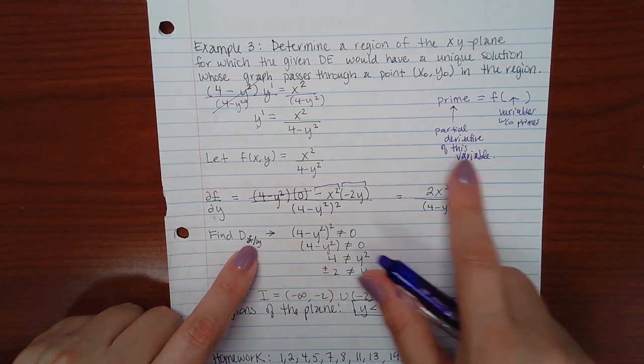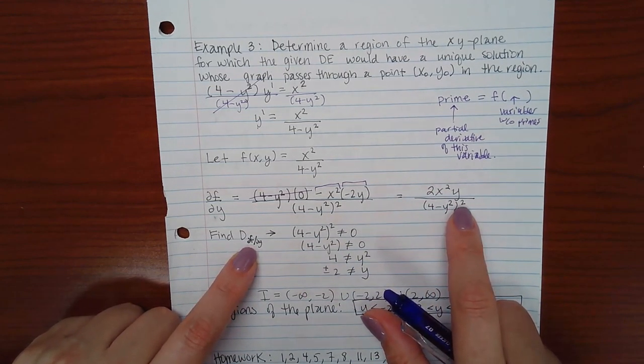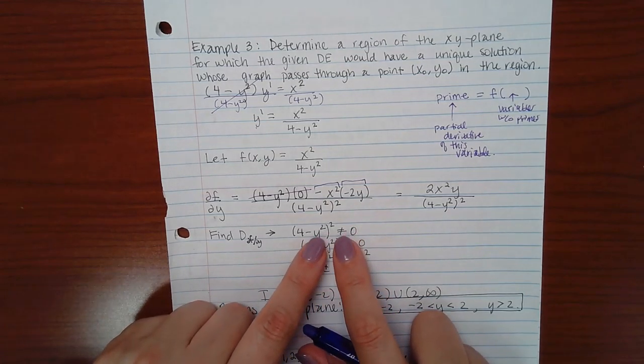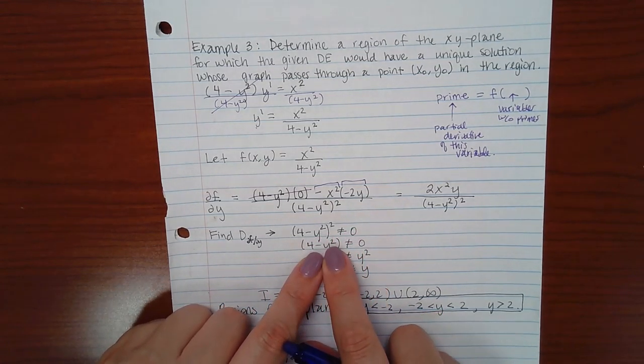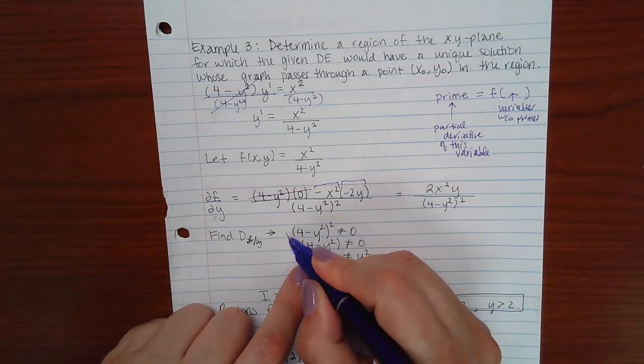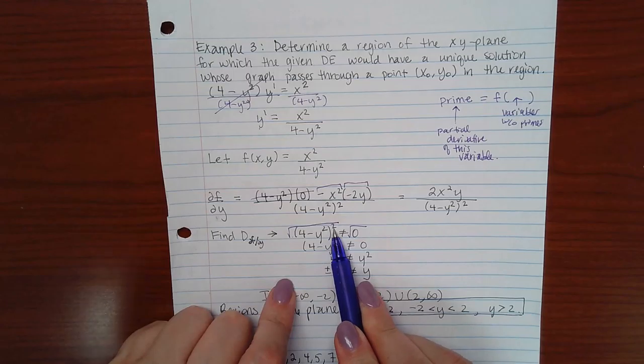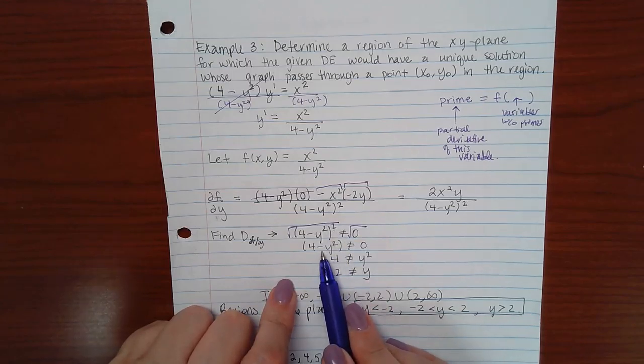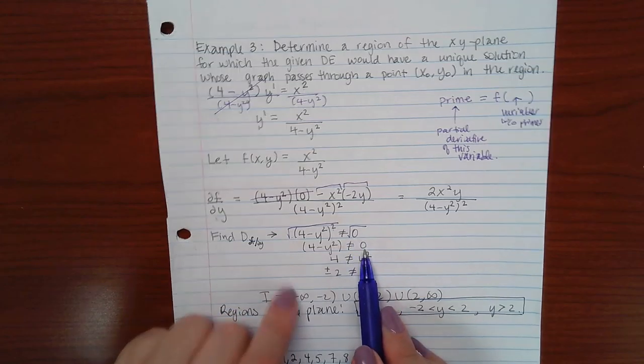Well, this is only undefined when the denominator equals 0. So I took my denominator, and I said it cannot equal 0. Which means that if I take the square root of both sides, the square root will undo the square, leaving me with just the radicand, 4 minus y squared.